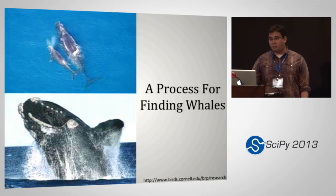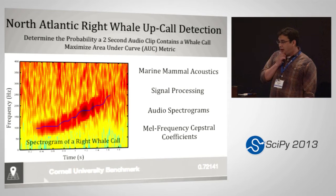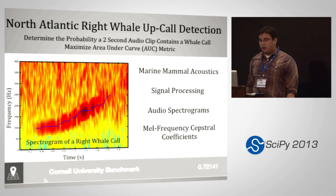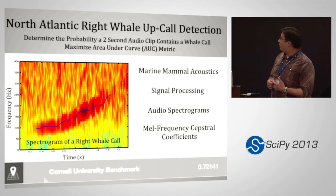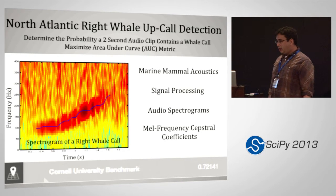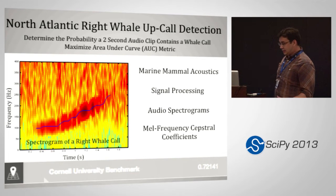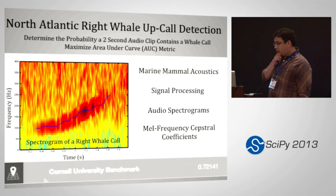I'm going to talk about a process for finding whales. This was the Kaggle competition: North Atlantic Right Whale Up-call Detection. They gave about 80,000 two-second audio clips, and the up-call is really low frequency — it sounds like a moo. The goal was to determine the probability that a whale exists in each clip, maximizing the area under the curve. On the forums you'd see things about spectrograms, signal processing, and mel-frequency cepstral coefficients — things I know nothing about. A spectrogram is a time-frequency plot, and the bright arc feature in the center is the up-call we're looking for. Cornell University published a benchmark with an AUC of 0.72.